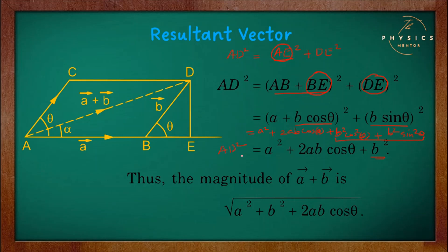The magnitude of vector AD is therefore given by the square root of the previous expression: the magnitude of vector AD equals the square root of a² plus b² plus 2ab·cos theta. This represents the magnitude of the resultant vector when we add vector A and vector B.